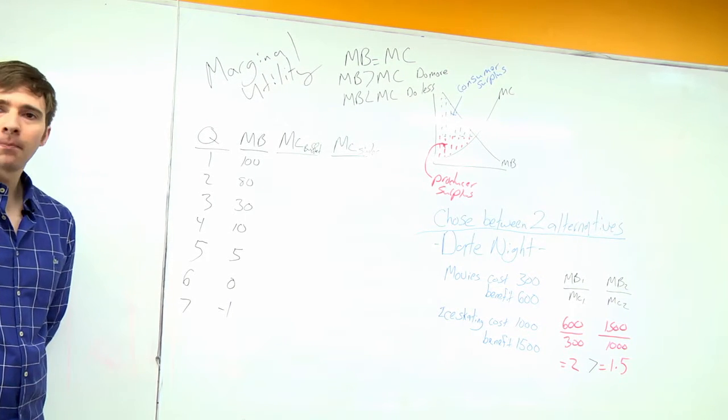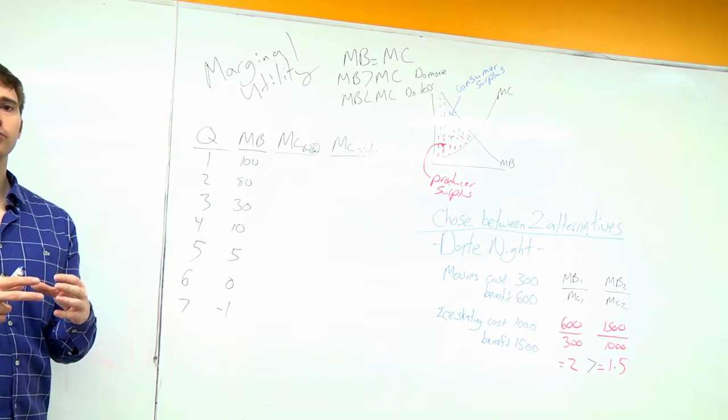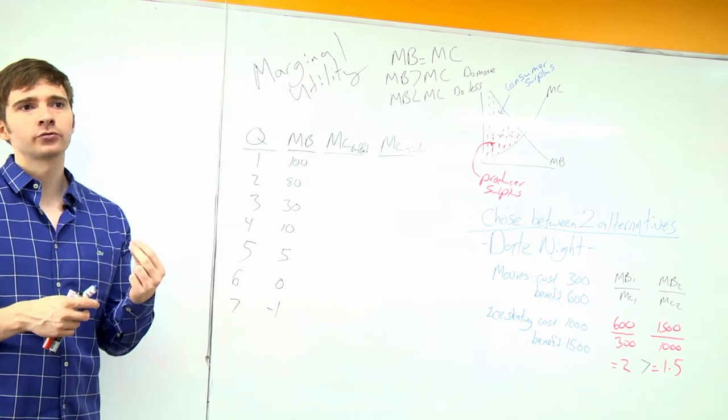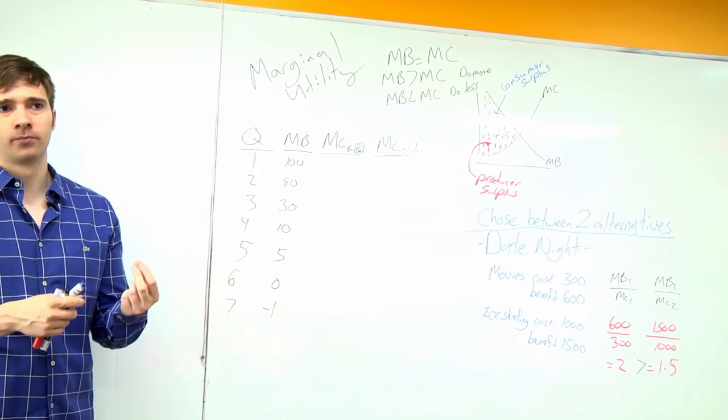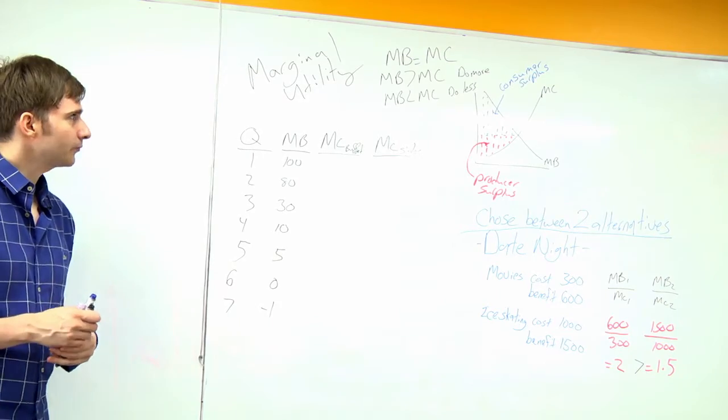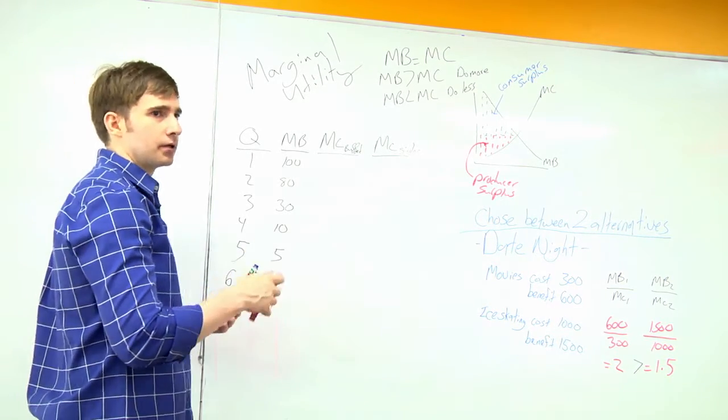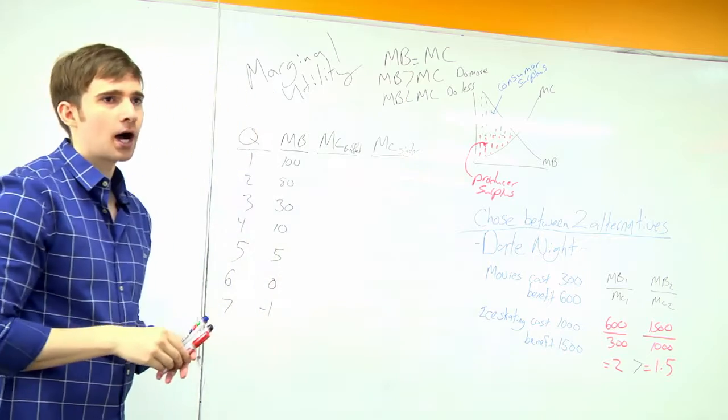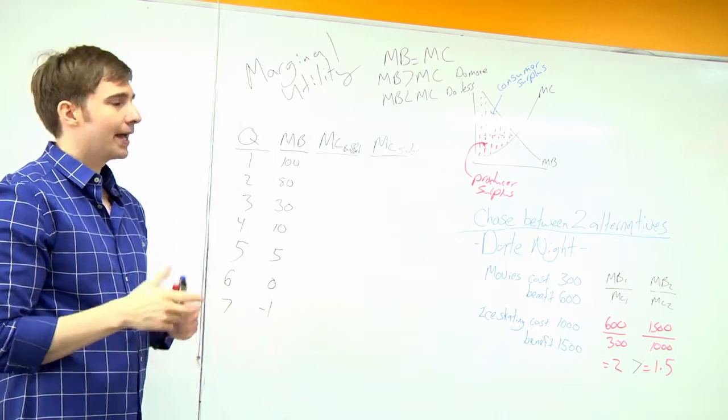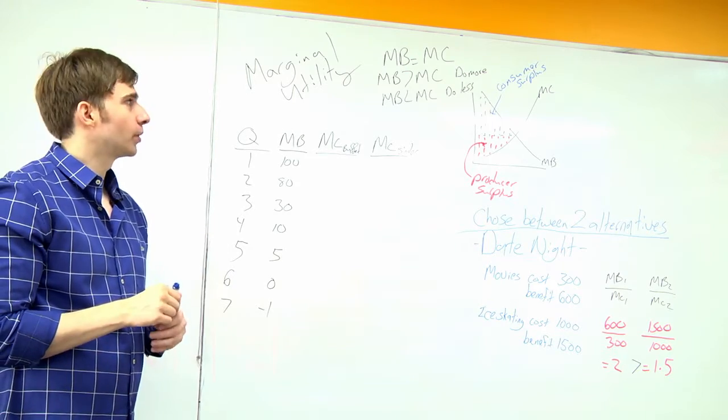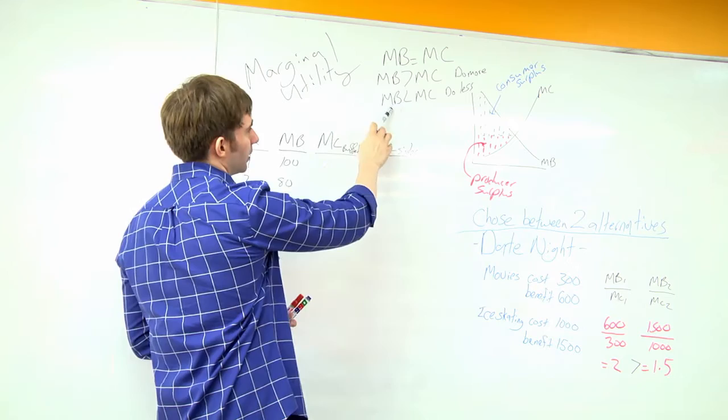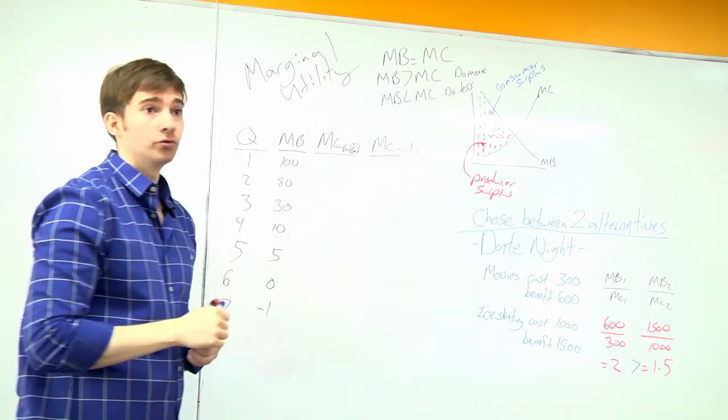When we talk about marginal benefit, we're using our marginal utility, our happiness, our level of joy and usefulness, and we're quantifying it in terms of money. We want to keep doing an activity until our marginal benefit equals our marginal cost. If my happiness is greater than the cost, we want to do more. If my happiness is less than the marginal cost, do less.